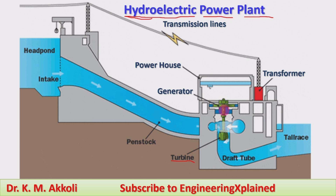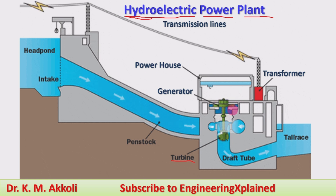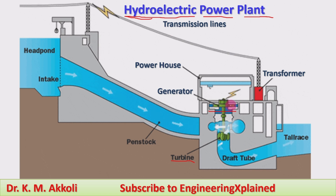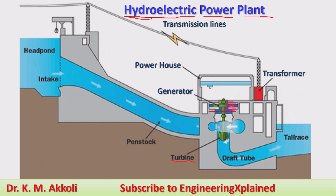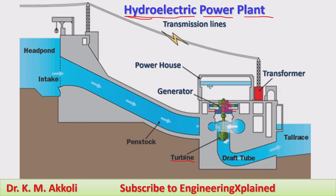The rotary shaft energy is then transferred to an electrical generator. In the generator, the stator windings are on the outside and the rotor is connected to the shaft on the inside. Due to Faraday's law, electricity is generated in the generator.